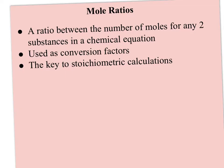The other big concept in stoichiometry is mole ratios, and that's what the balanced equation gives you — it allows you to set up a ratio between any two components: reactant and reactant, reactant and product, or product and product. It's a ratio between the number of moles for any two substances in a chemical equation, and we use them as conversion factors to predict something about another component. I can use a mole ratio to predict how much product I'll get — it's really the key to stoichiometric calculations.